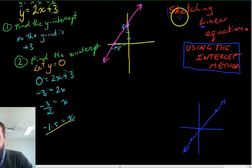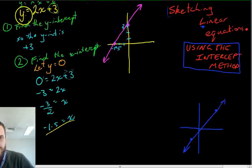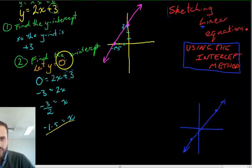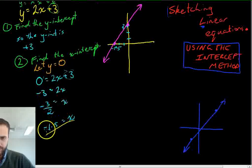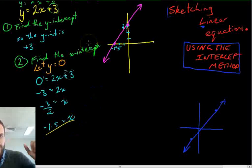So recapping, sketching linear equations using the intercept method, we need to find the two intercepts. If it's written in this form, y equals mx plus c, the plus c will be the y-intercept, and that can go there. To find the x-intercept, you need to let y equal 0. Put 0 in where the y was, solve all of that, and we have an answer, negative 1.5 equals x. Good luck.